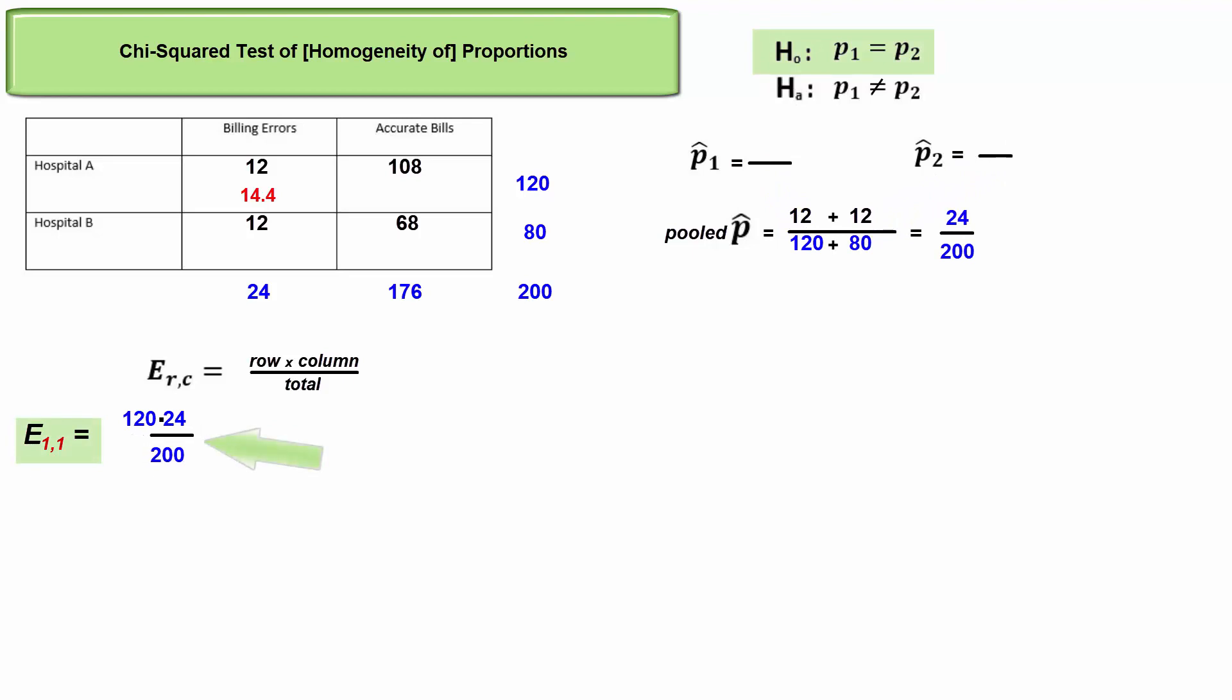The column total divided by the grand total is p hat, in this case 12 percent. Hospital A took a sample of size 120, so we would expect 12 percent of those 120 bills to be in error.